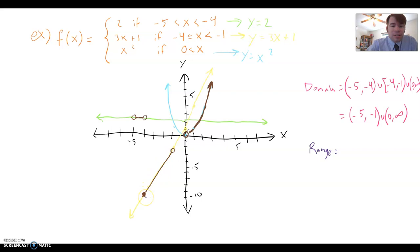So if I found f of negative 4, f of negative 4 will be 3 times negative 4 plus 1. That's negative 12 plus 1. That's negative 11.